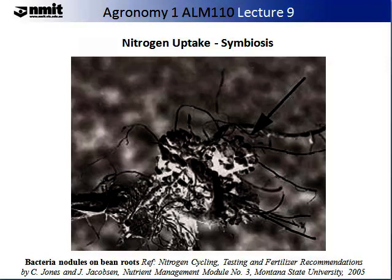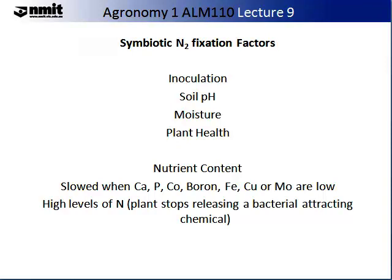The image on screen shows bacteria nodules on bean roots. Symbiotic nitrogen fixation is affected by many factors, including inoculation, soil pH, moisture of the soil, plant health and nutrient content. If calcium, phosphorus, cobalt, boron, iron, copper or molybdenum are lacking in the soil, this can slow symbiotic nitrogen fixation. High levels of nitrogen in the soil can stop symbiotic nitrogen fixation — when high levels are found in the plant, it stops releasing a bacterial-attracting chemical, so nodules are not formed as bacteria are no longer attracted to the roots.